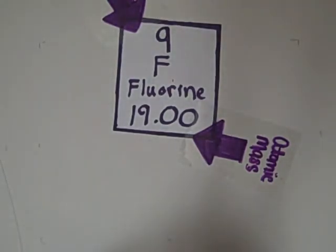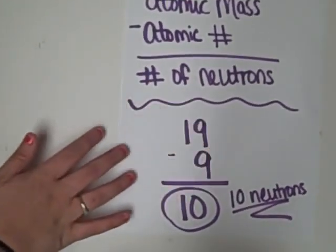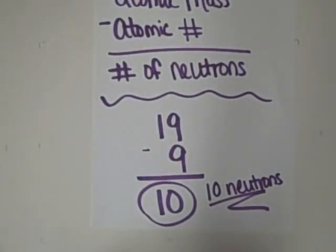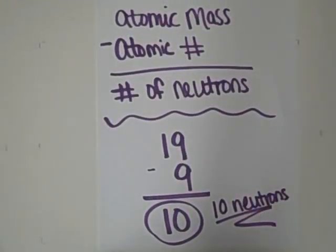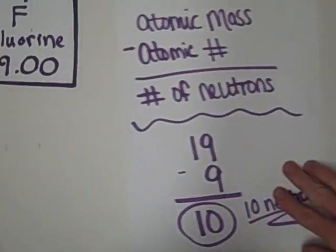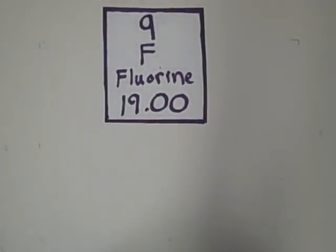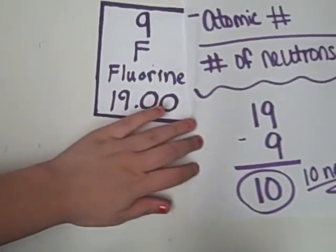Okay. What else can you tell me? Well, just remember what the periods and the group numbers are, and also know how to get the neutrons. How do you find the number of neutrons? You subtract the atomic number from the atomic mass and that gives you the number of neutrons. So in this case we have fluorine with 9 as your atomic number and 19 as your atomic mass. So you subtract 9 from 19 and you get 10 neutrons.